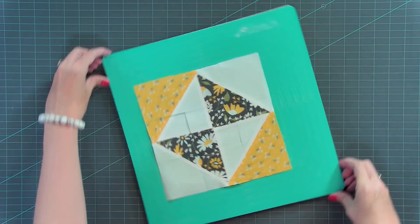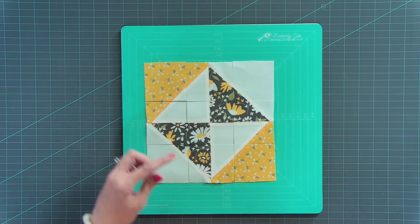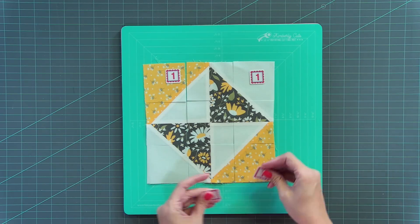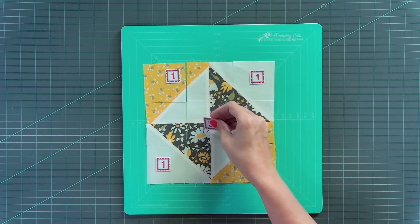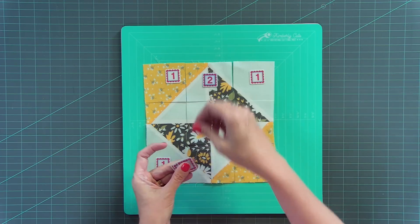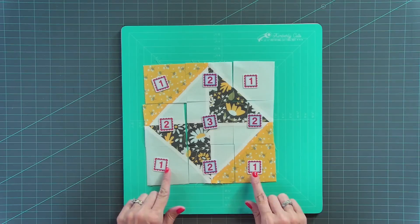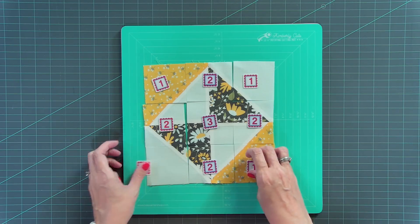And then I'm gonna start with the yellows in this corner. And if you look at the diagrams, the corner pieces are your number one pieces, the center is number three, and then the remaining pieces are your number twos.